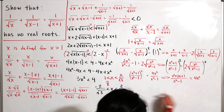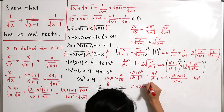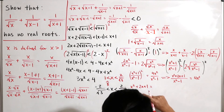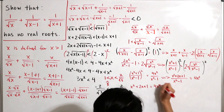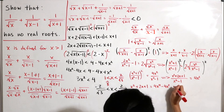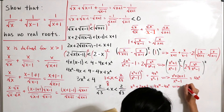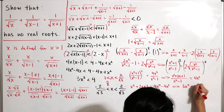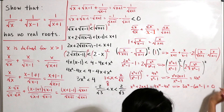Multiplying both sides by (x squared minus 1), we get x squared plus 2x plus 1 equals 4x to the fourth minus 4x squared. Setting the equation equal to zero and rearranging gives us 3x to the fourth minus 6x squared minus 1 equals zero.